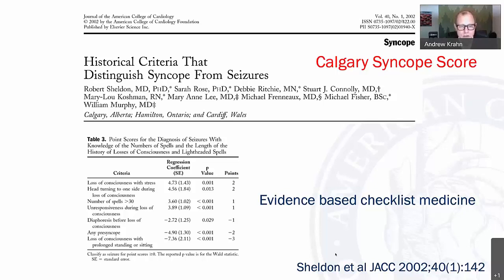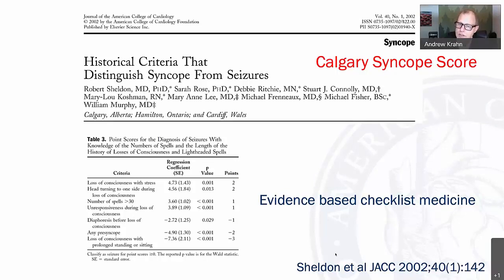This is a powerful tool to teach people — such as your emergency department or primary care referring cardiologists — about the value of structured history. For example, diaphoresis points to vasovagal syncope, while head turning points to a seizure. These are key, simple things to teach that are quick, easy, and evidence-based.